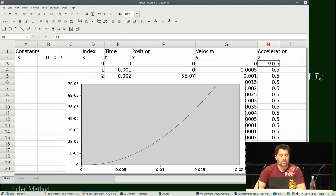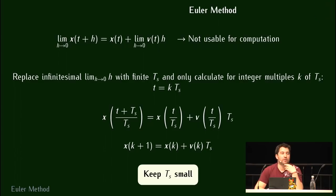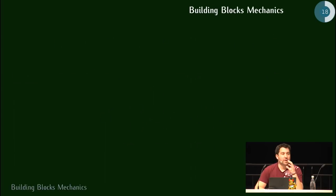But now we want to model something. We don't have an accelerometer yet. So where do we get the acceleration from? One warning: always keep the sampling period small. We are going to discuss later on what small means.